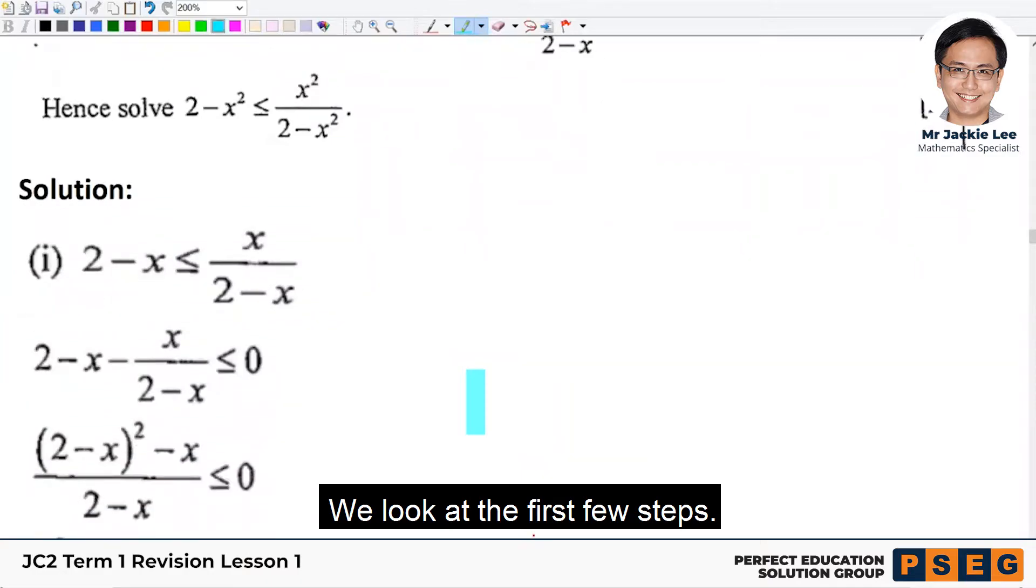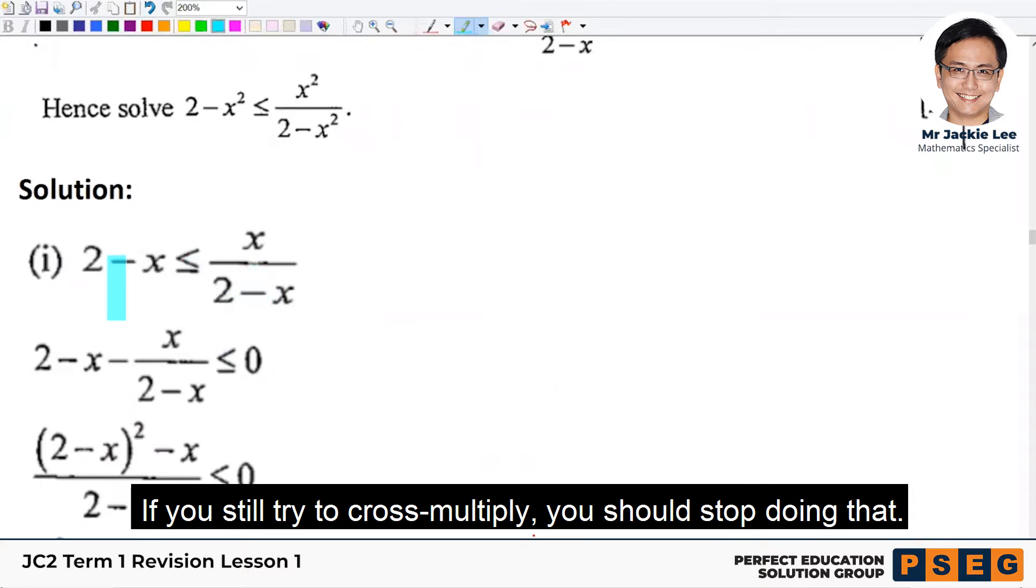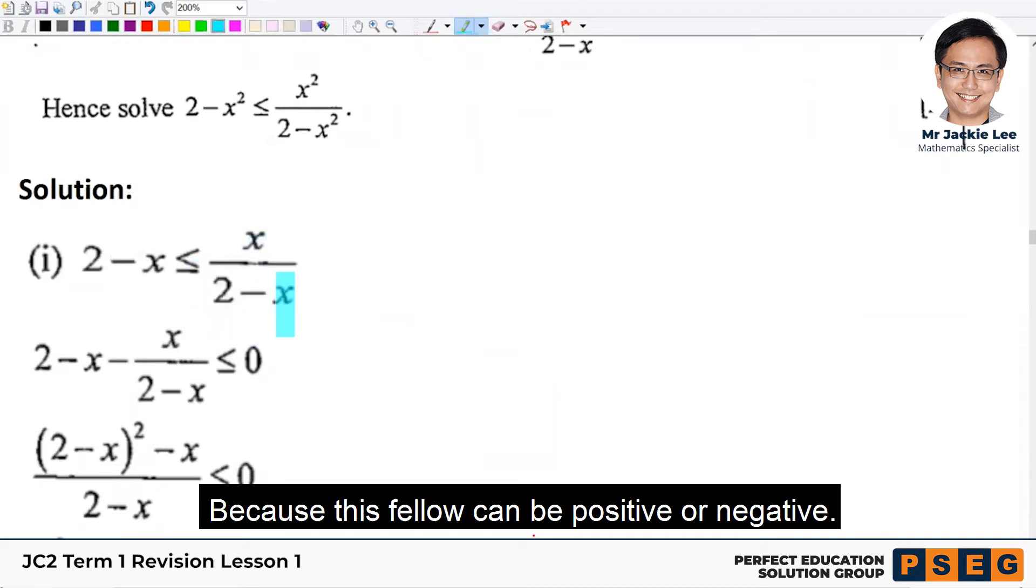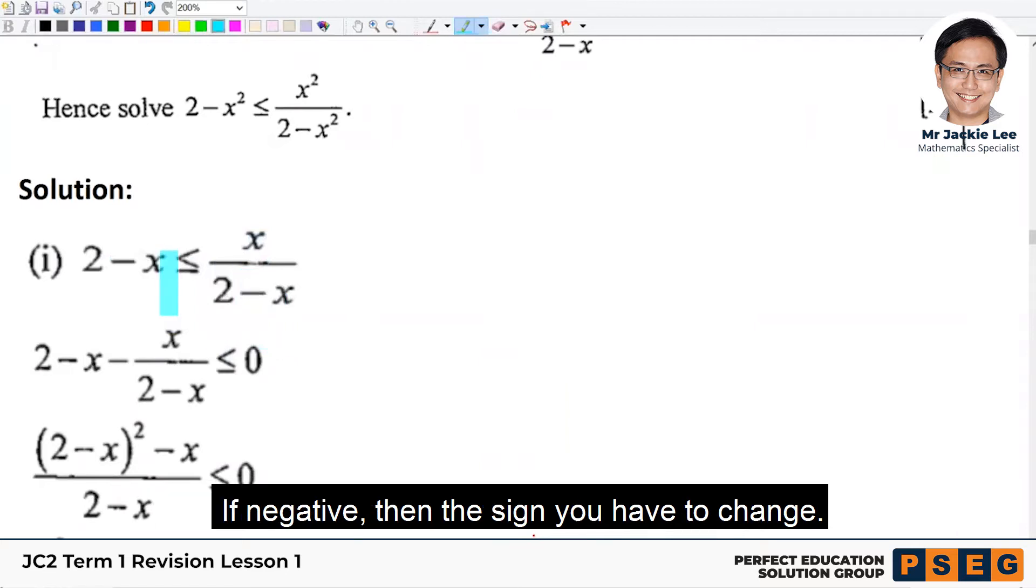So we look at the first few steps. Now, first of all, this 2-x, right? Never cross multiply. You will still try to cross multiply. You should stop doing that. Never cross multiply. You know the reason? Because this fellow can be positive, can be negative. So we cannot confirm whether it's positive or negative. Because if negative, then the sign you have to change.